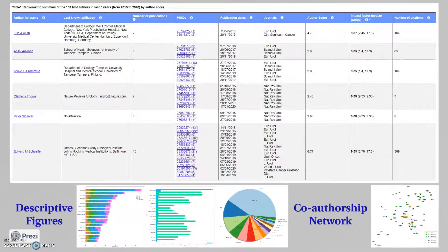This is how search results are displayed. First you will have a table containing a bibliometric summary of the first 100 authors from your search. Those authors are sorted by a self-defined author score that considers variables such as the number of publications, the author position in the articles, the journal impact factor, and others. Each row provides details on one author, including last known affiliation, publications, number of citations, and others.